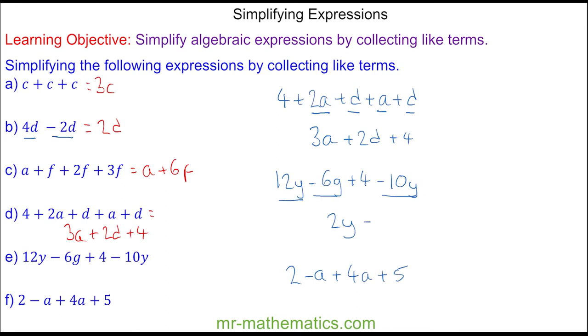For question f, we have four a's, we're taking one a away, so we have 3a, and two and five makes seven, so we have 3a plus 7.